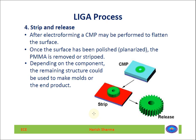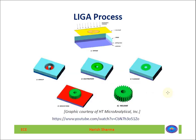This diagram shows the complete LIGA process. The steps are: first apply PMMA, then expose with synchrotron X-ray, then develop, then electroform, then planarization using CMP, then stripping to remove the photoresist, and finally release the component. The end product may also be used directly.